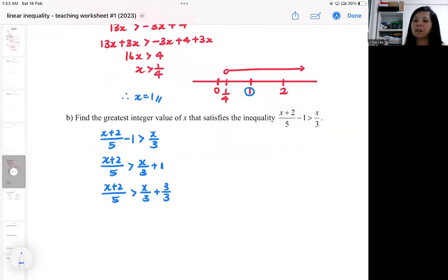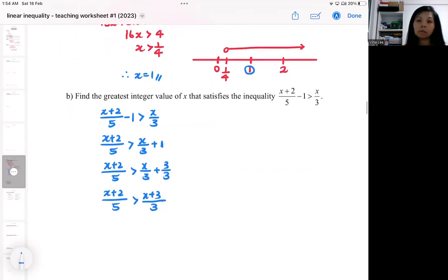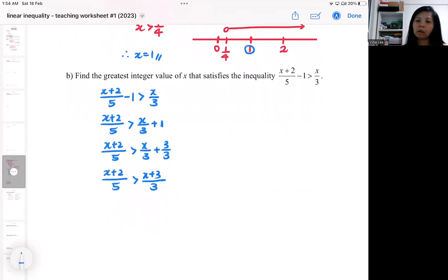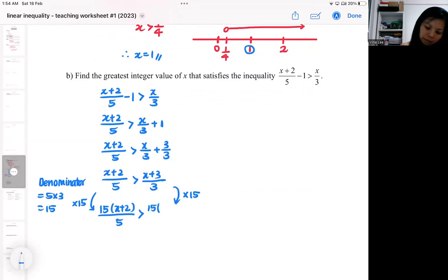In this case, I plus one on both sides. So I show you the correct way first, then I show you what can go wrong. The correct way you look at the denominator. So there are two denominators. It will be something like five times three, so that is 15. What you should do is you multiply 15 on both sides.